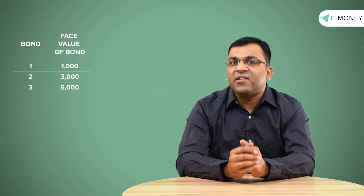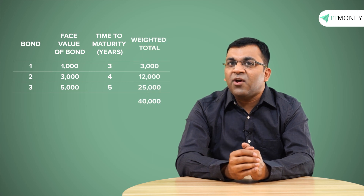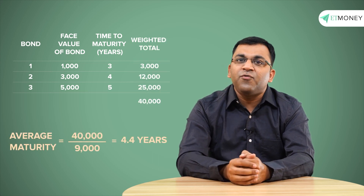Maturity is defined as the time period at the end of which the principal amount is returned to the bondholder. Debt funds invest in many instruments, each carrying a different maturity, which requires the debt fund to calculate the portfolio's average maturity. For example, a debt fund invested in three bonds with face values of 1,000, 3,000, and 5,000 rupees, maturing in three, four, and five years respectively — a weighted average gives an average maturity of 4.4 years.